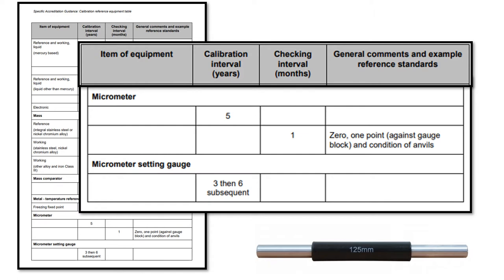NADA also recommends checking the micrometer against the setting standard every month, though most of us will check it as soon as we take it out of the box. NADA recommends setting standards be measured after the first three years, then every six years after that. When you purchased the micrometer, did it come with a calibration certificate? Depending on the brand, you might need to send it out immediately for calibration — check your particular standard for instructions on handling new equipment.